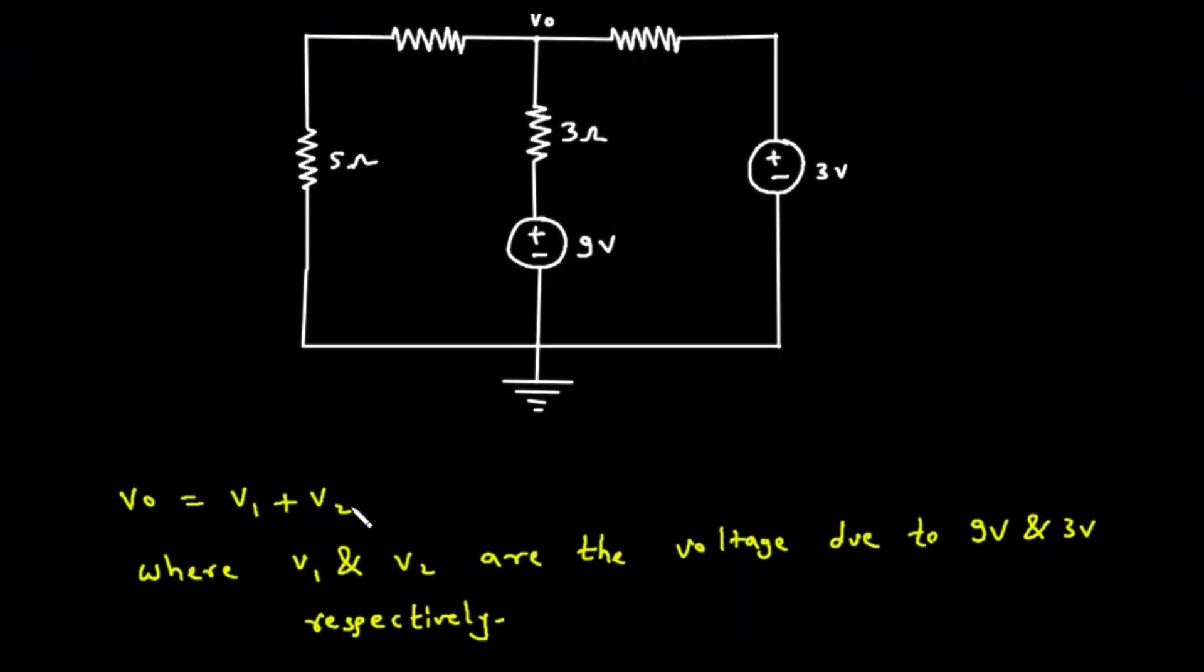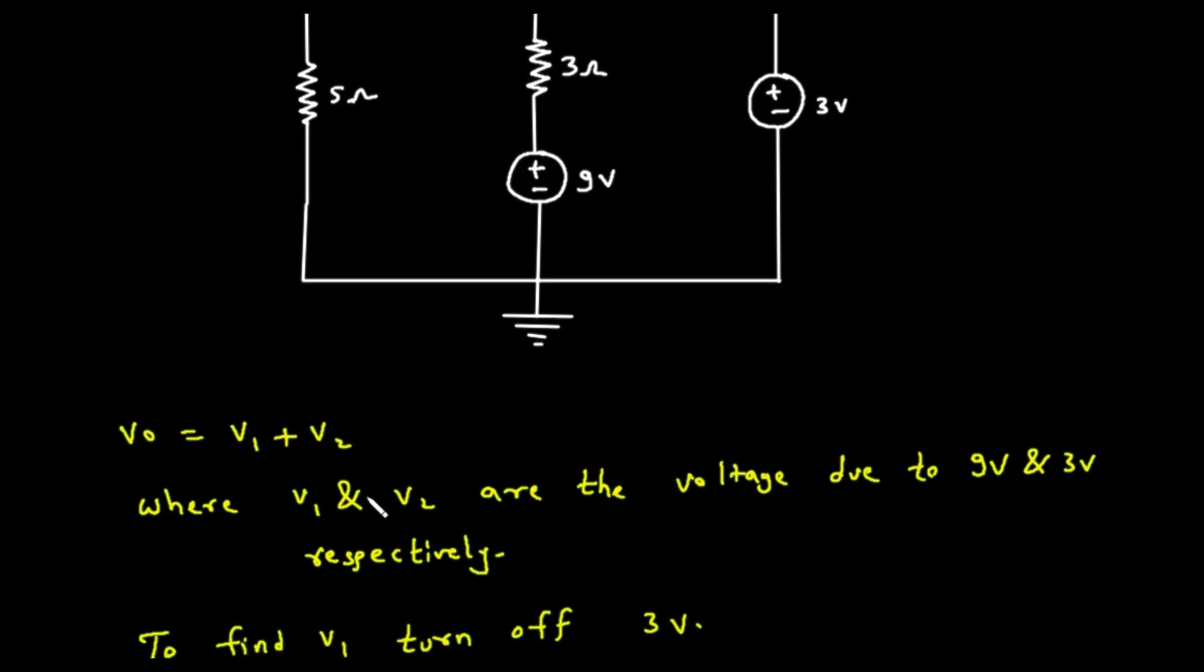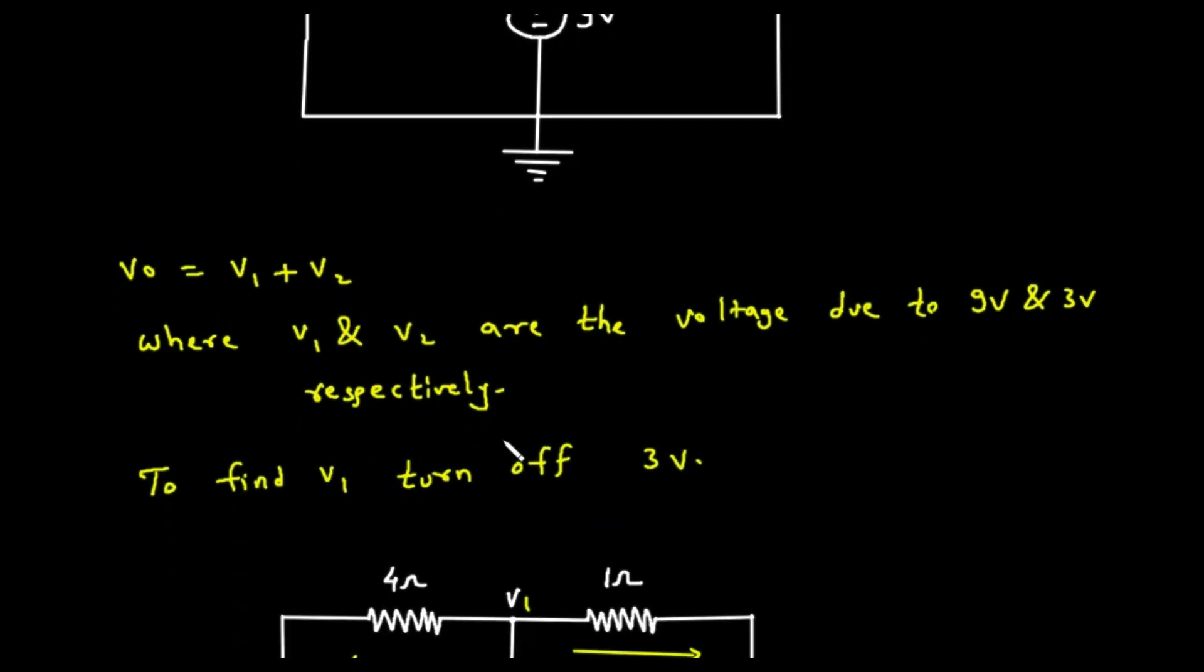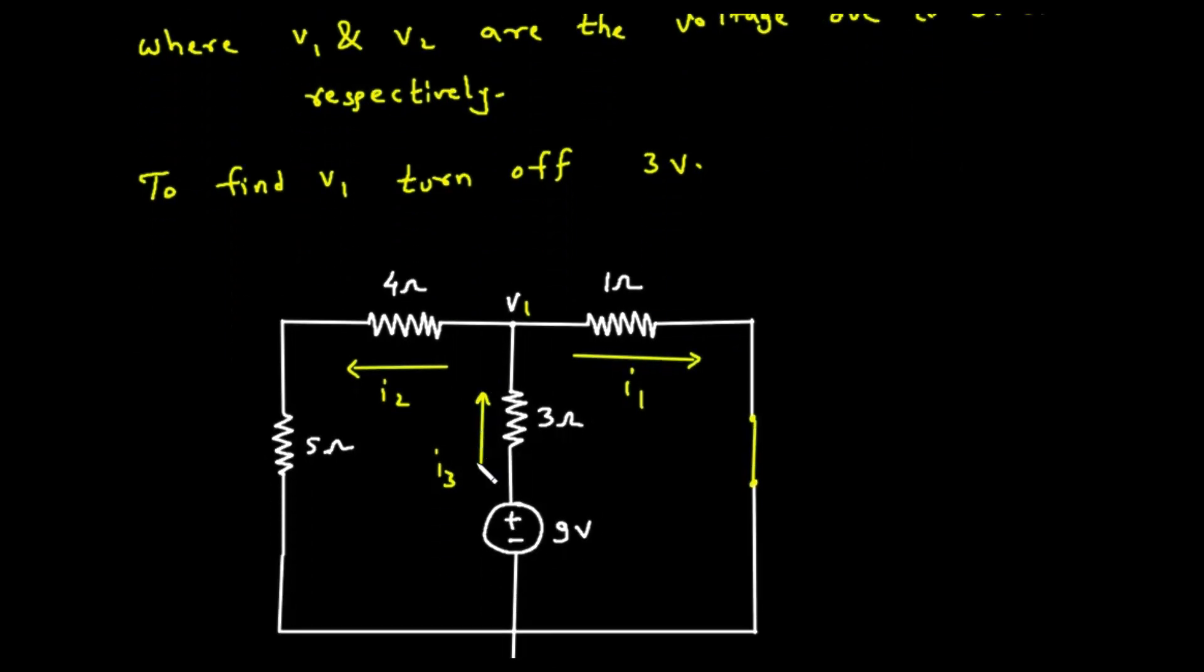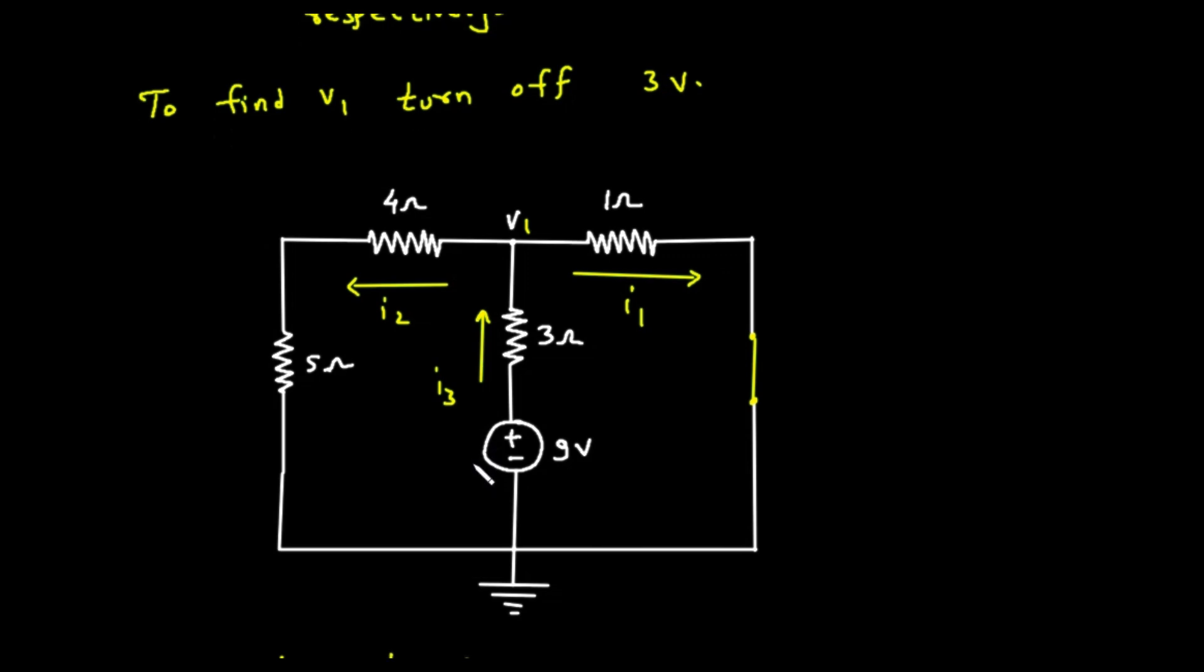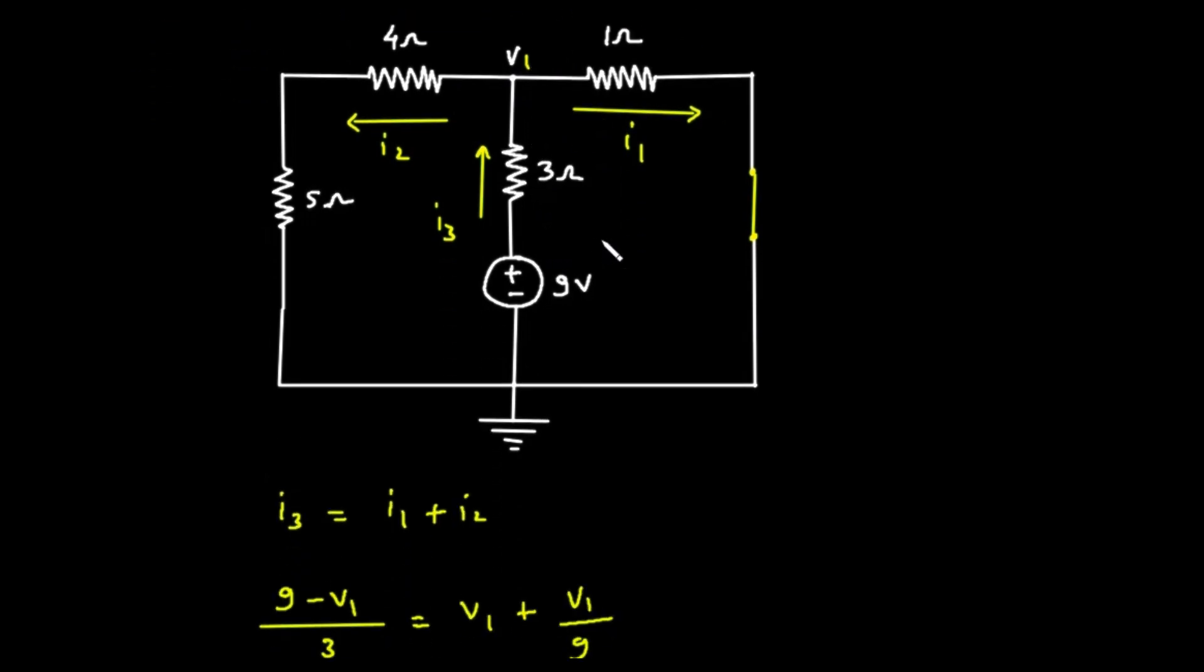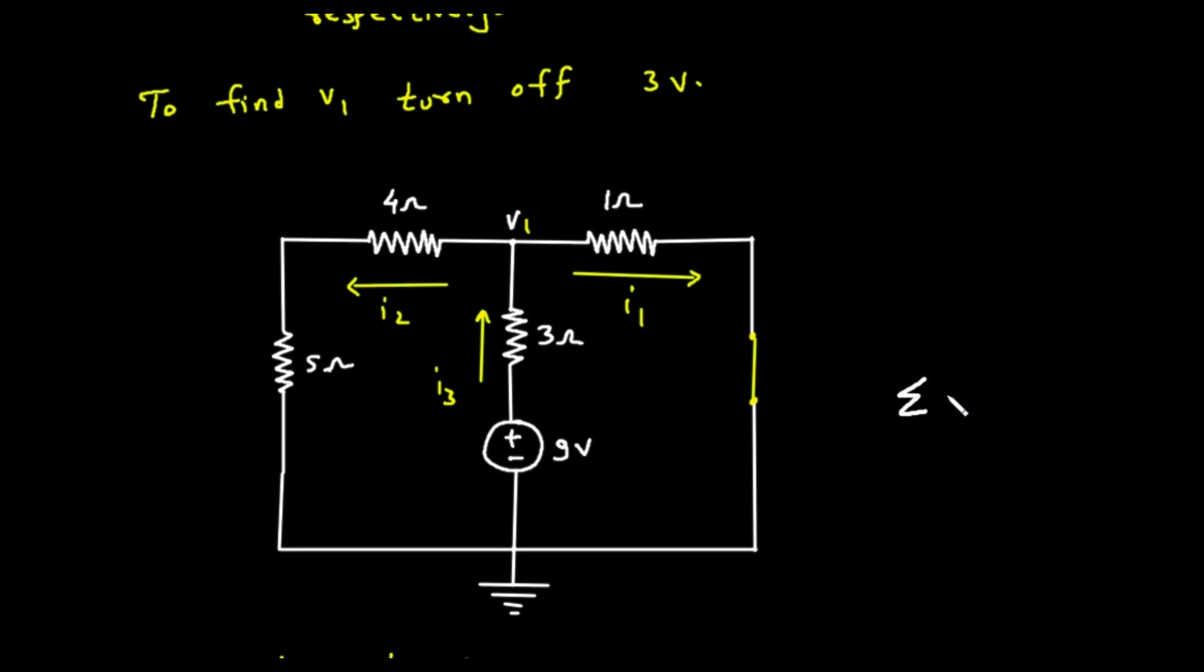Let's begin with the first part, finding V1. To find V1, we need to keep the 9-volt source active and turn off the 3-volt source. As we just discussed, turning off a voltage source means replacing it with a short circuit, or a simple wire. Let's redraw our circuit. Everything stays the same, except the 3-volt source on the right is now gone, replaced by a straight line connecting the 1-ohm resistor directly to the ground line at the bottom. The voltage at our target node in this new, simpler circuit is what we call V1. To find V1, we'll use a fundamental rule called Kirchhoff's Current Law, or KCL. KCL states that at any junction or node in a circuit, the total amount of current flowing into that node must equal the total amount of current flowing out.